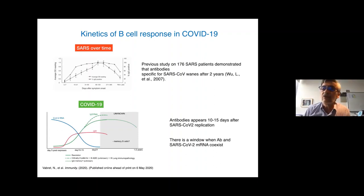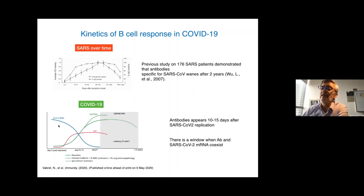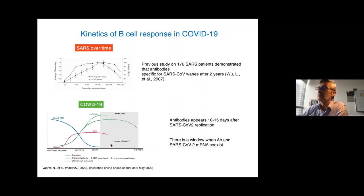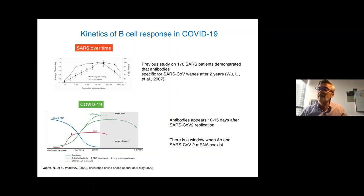The kinetics of antibody production during COVID-19 infection show that the virus starts to replicate and is basically able to replicate without symptoms at the beginning, and also without antibodies. This is the real critical period when the virus can spread. Data appearing recently in the literature show that antibody starts to be produced around two to three weeks after symptoms. There is a window when the antibody and the SARS-CoV-2 messenger RNA coexist — about 10 days — during which we don't have data showing that the virus is completely eliminated.